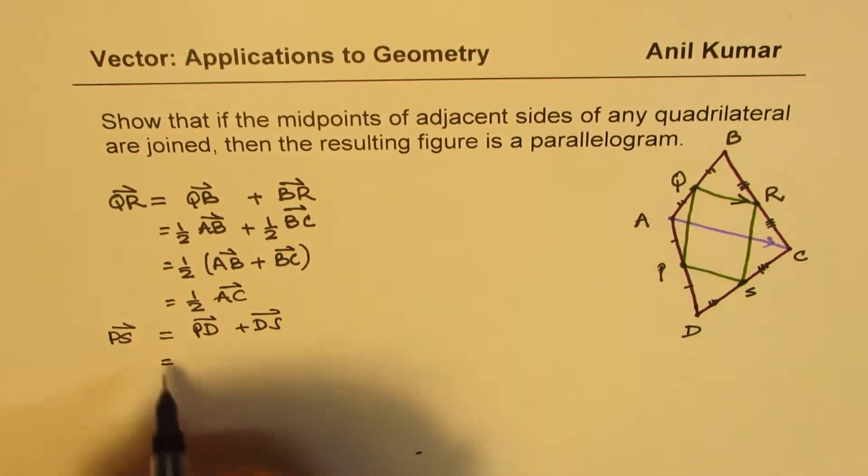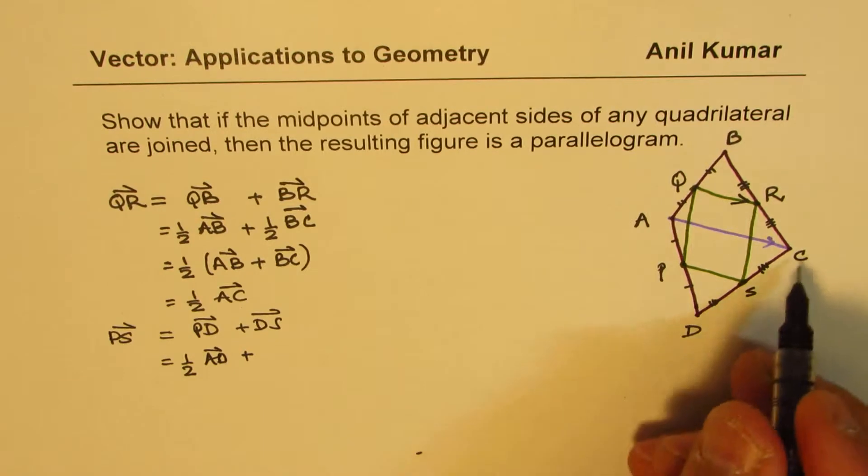Now, P to D is half of A, D, since P is the midpoint. And D, S is half of D, C.